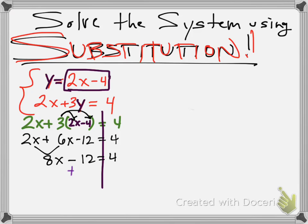Add 12 to both sides, cancel. 8x equals 16. Divide by 8. x equals 2.